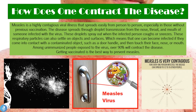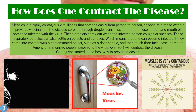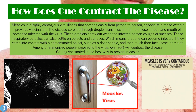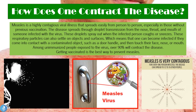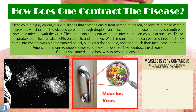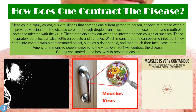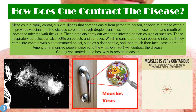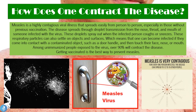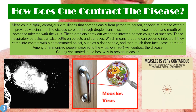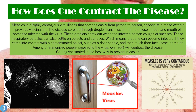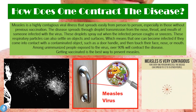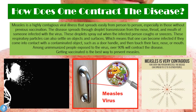These respiratory particles can also settle on objects and surfaces, meaning one can become infected by touching a contaminated object such as a door handle and then touching their face, nose, or mouth. The virus stays active and alive on surfaces, so another person can pick it up this way. Among unimmunized people exposed to the virus, over 90% will contract the disease — meaning if someone hasn't been vaccinated, they have a 90% chance of actually getting the virus.